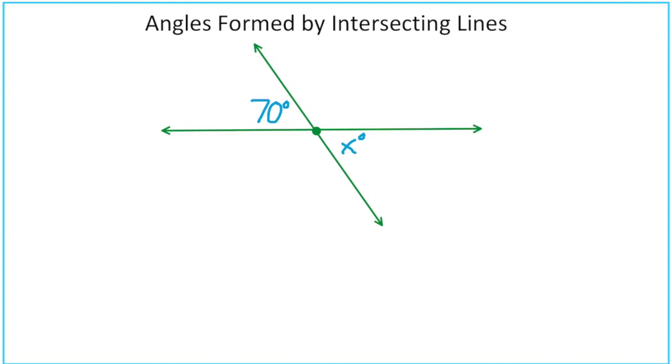So we'll start by actually labeling another angle. Let's call that angle n. And now we can use our line equals 180, and we know that n plus 70 has to equal 180. So that means n is 110 degrees.